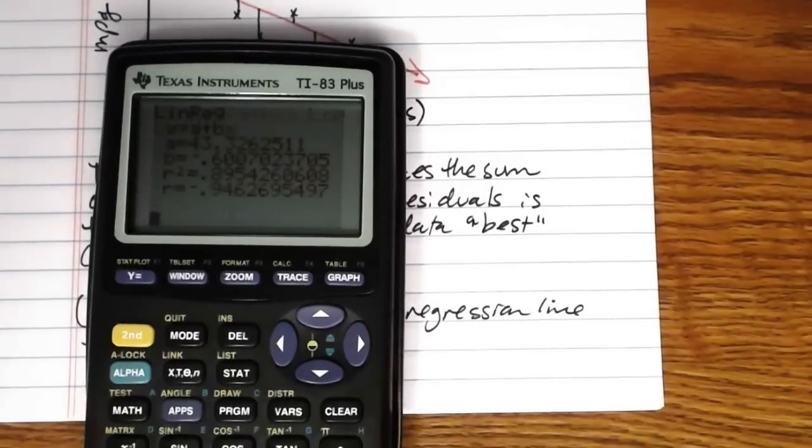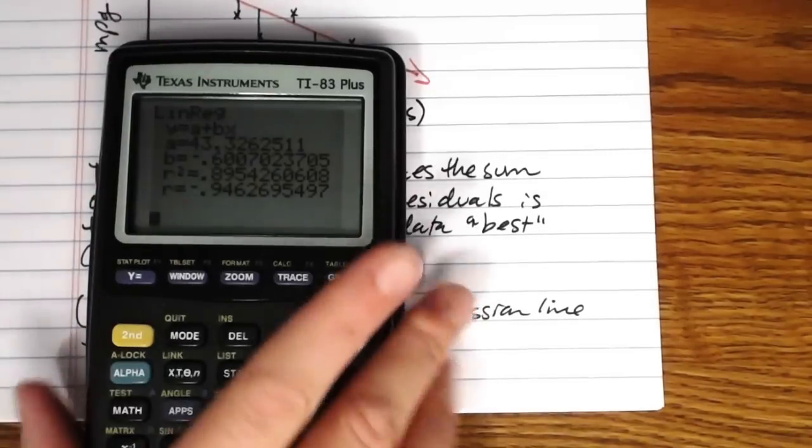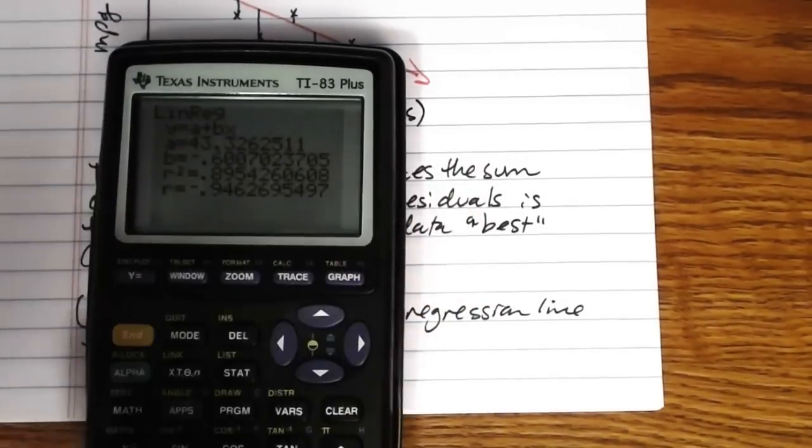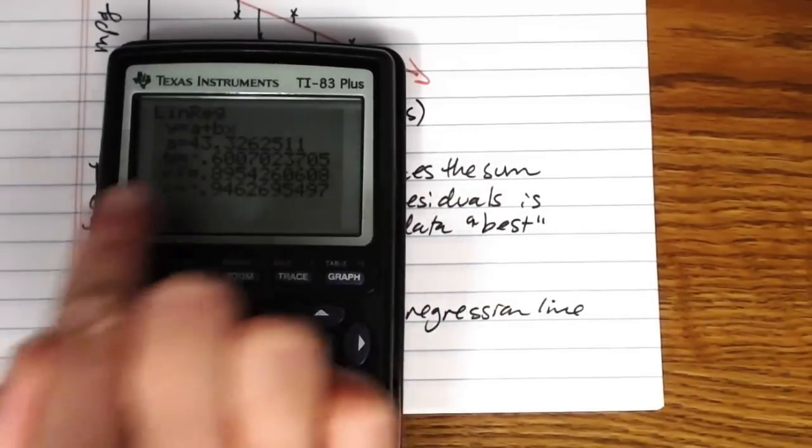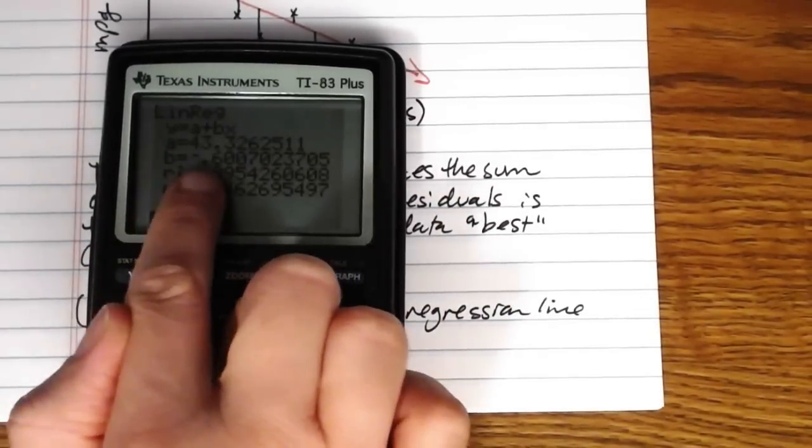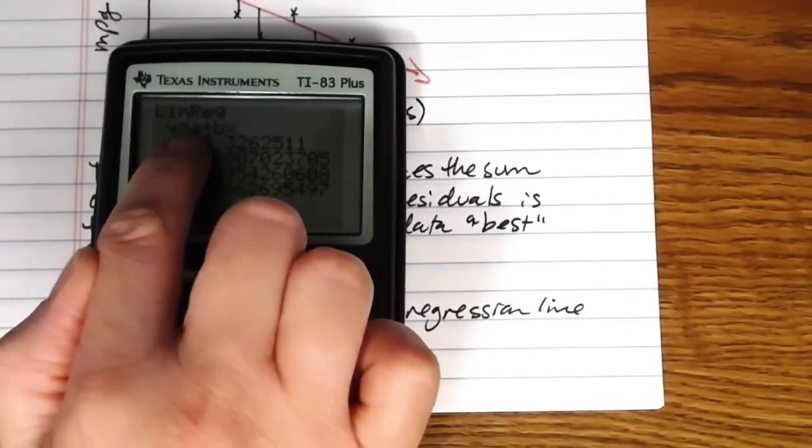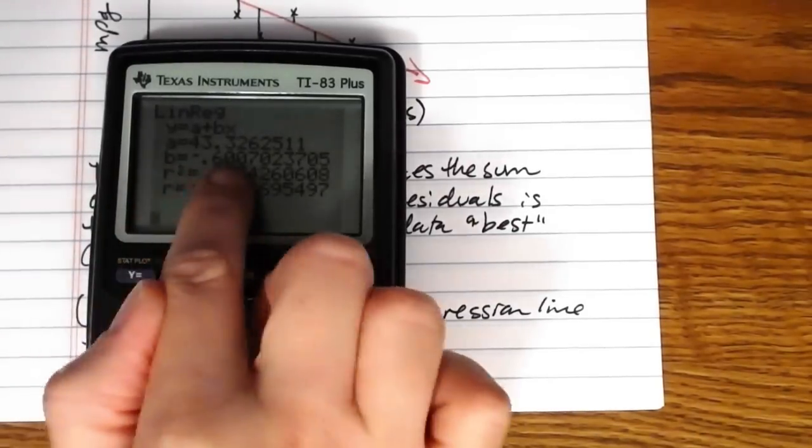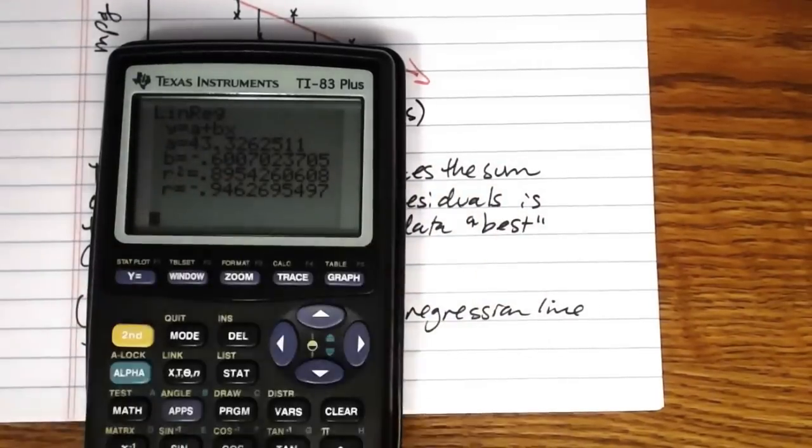So at this point we press enter. Here's the equation, I'll tell you how to interpret that now. So we've got linreg y equals a plus bx and then it says our a is about 43.33 and our b is about negative 0.60. So this a value here, that is your intercept for your line, and this b value here goes right next to your x in the equation, that's the slope of the line.